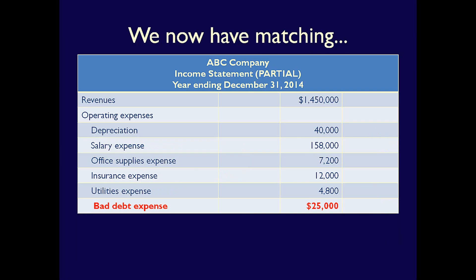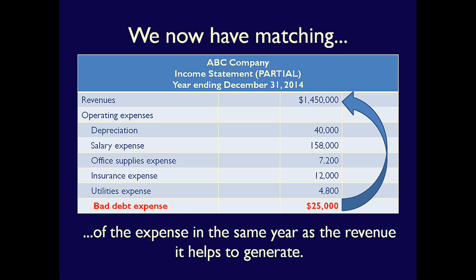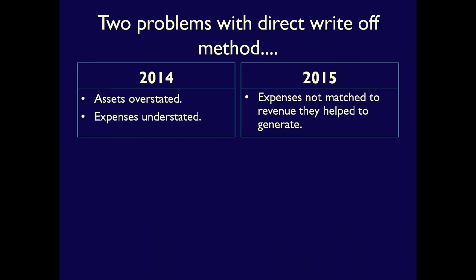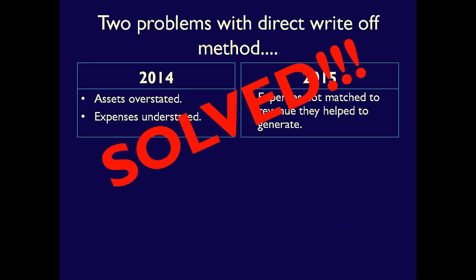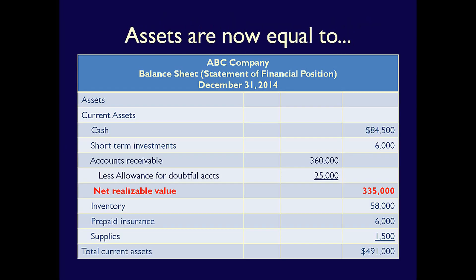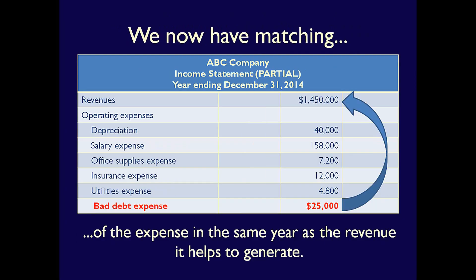On our income statement, revenues would be $1,450,000. Remember, this includes $360,000 of revenue that we sold but have not as yet received in cash. Expenses would include the Bad Debt Expense of $25,000. Notice the Bad Debt Expense of $25,000 is recorded in the same year as the related revenue, so we are matching our expenses to the revenue they helped to generate. By using the allowance method, we've solved the two problems we had in 2014 and 2015 under the direct write-off method. Our accounts receivable are at their future economic benefit, and the expenses are in the same year as the revenues they helped to generate.